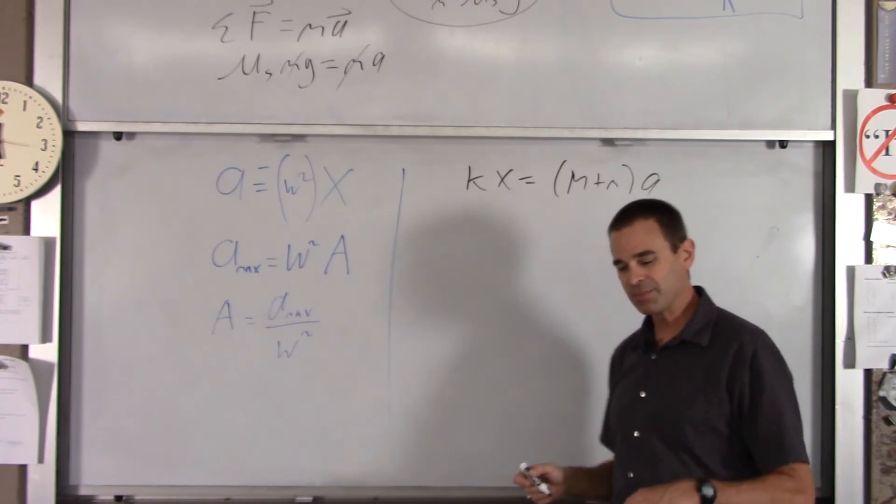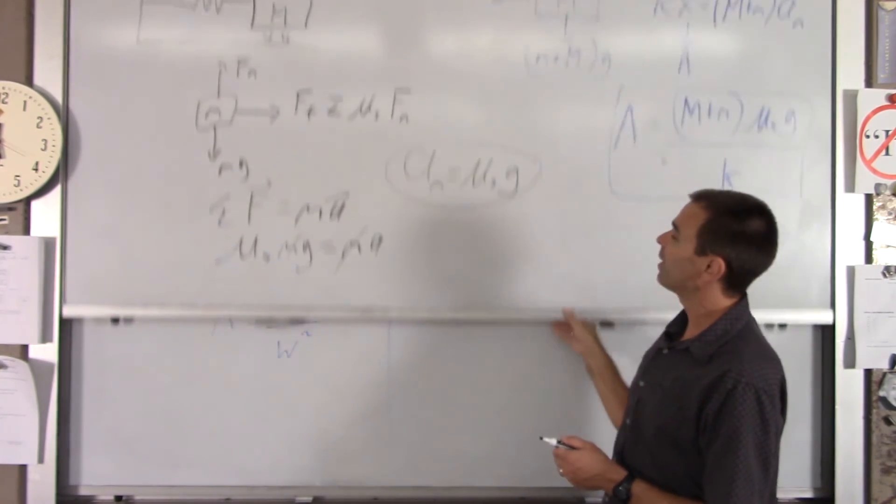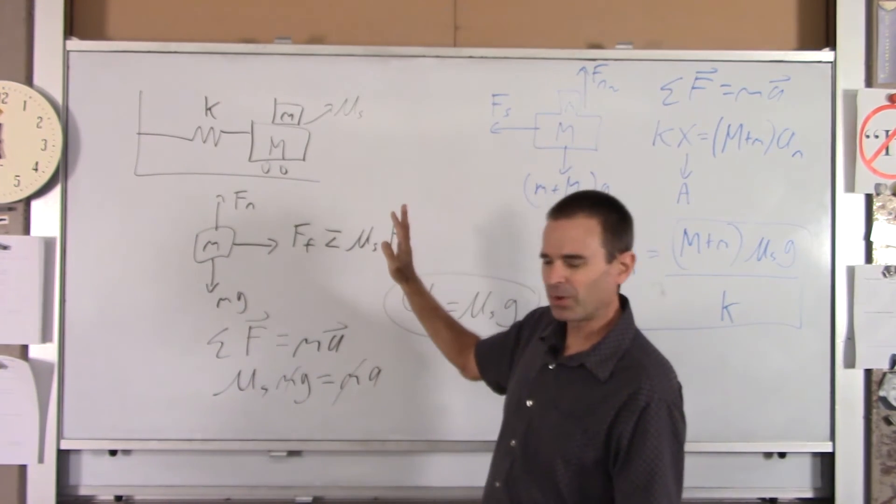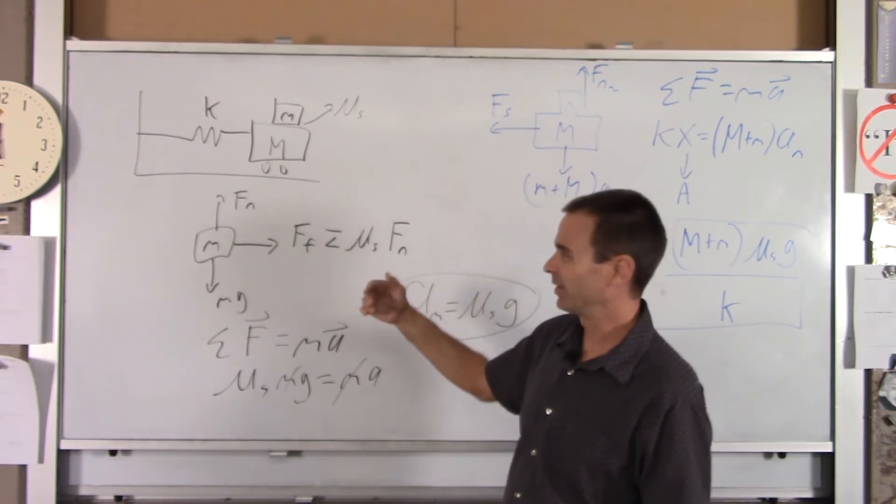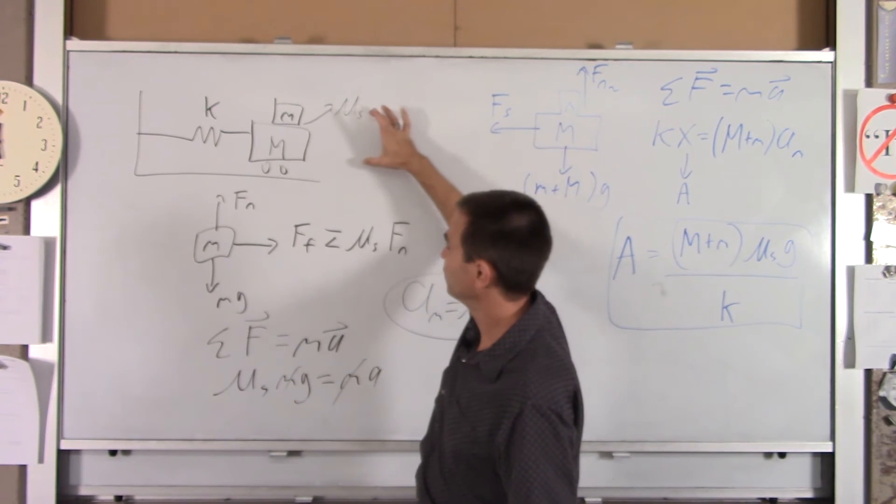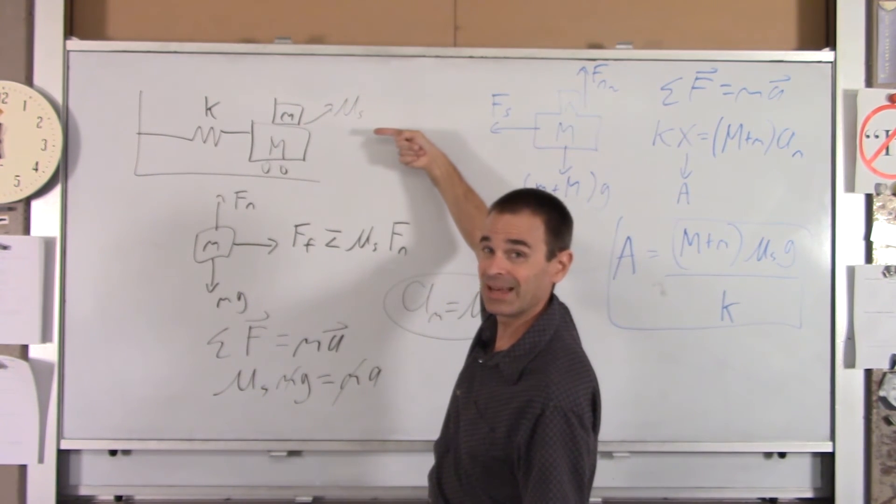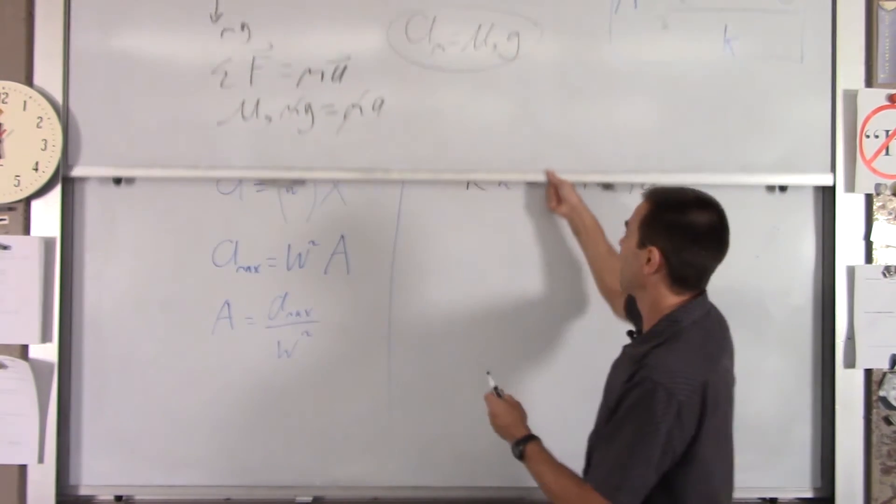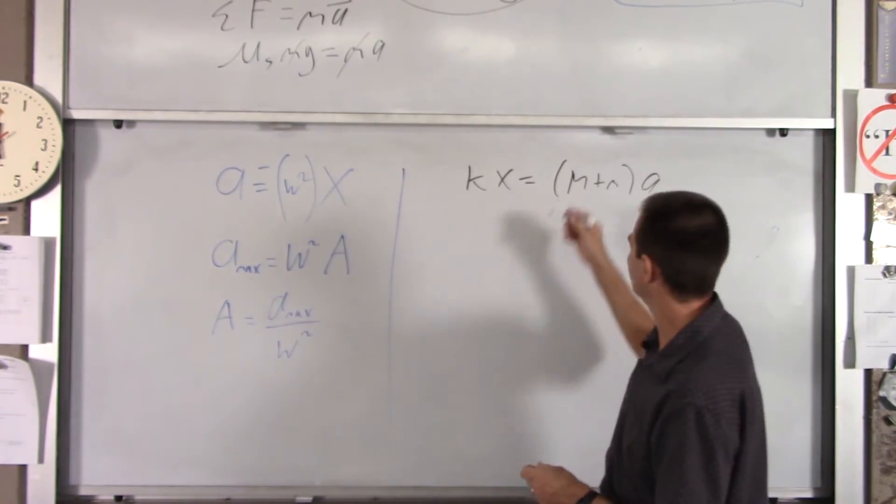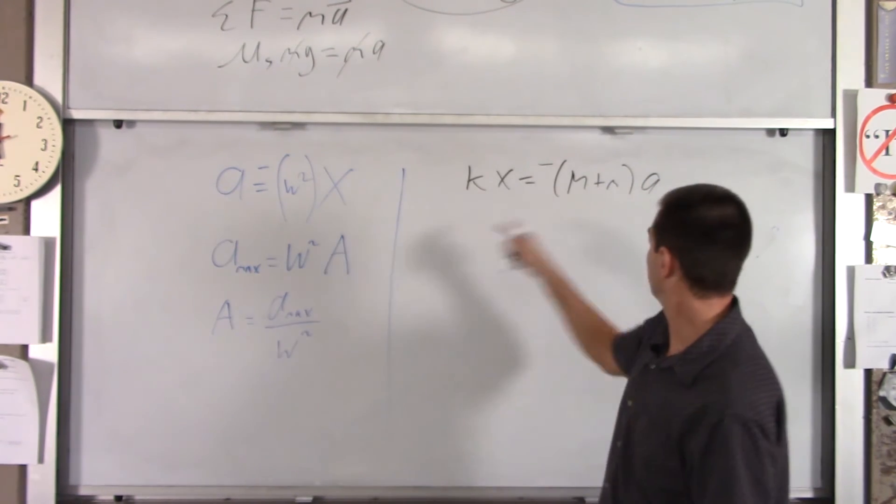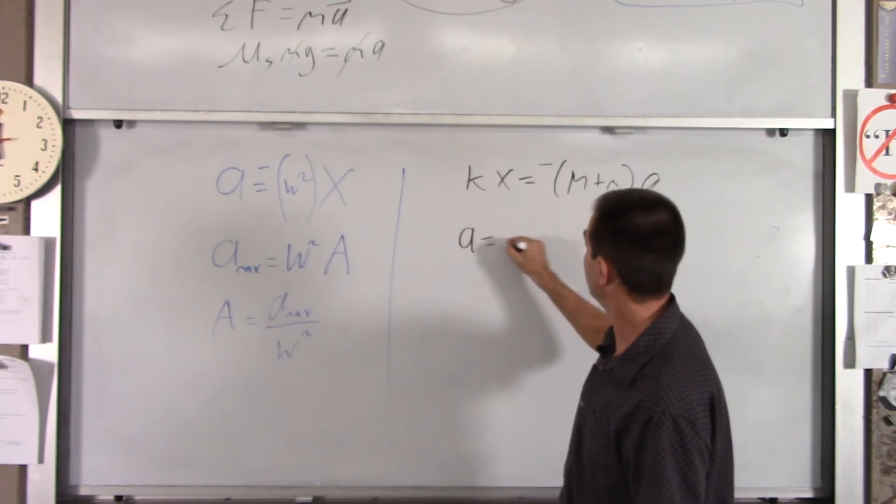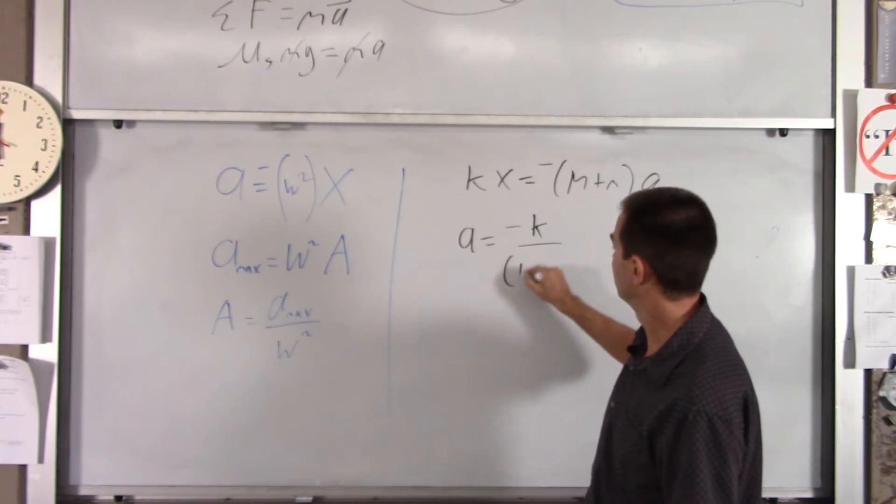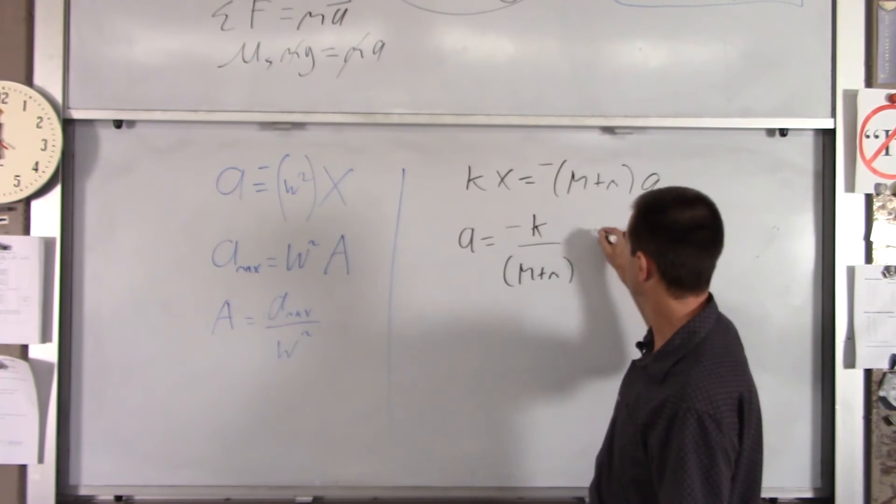So, it's kx equals big M plus little m a. Now, we'll make one slight modification. In this problem here, I was only care, I only cared about the magnitude. I have to now kind of worry about the direction. I need that negative sign in there. So, here's the deal. If I pull this thing to the right, the spring is going to accelerate left. So, whatever x is, a is the opposite sign. So, I will conveniently add a negative here. But then, we've got our equation. If I solve for a, a equals negative k over big M plus little m x.